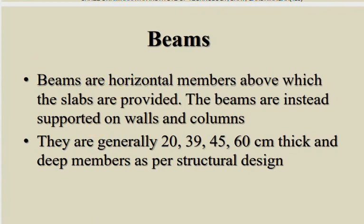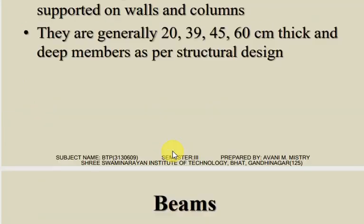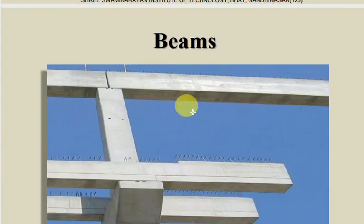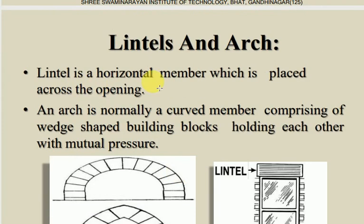Beams are the horizontal members above which slabs are provided. The beams are in turn supported on walls and columns. Their size is 20 by 30, 45, or 60 cm thick and deep members as per structural design.